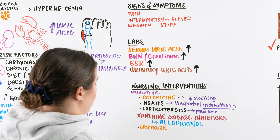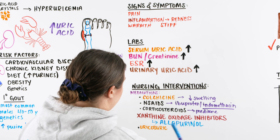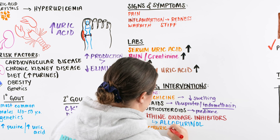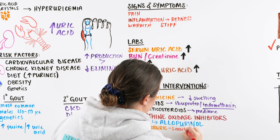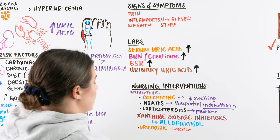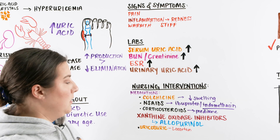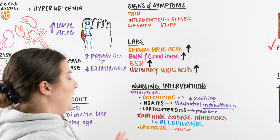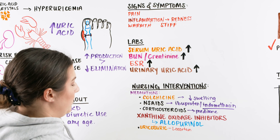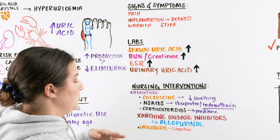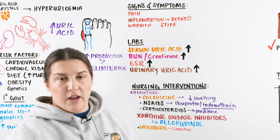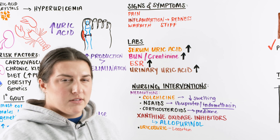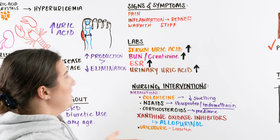The last category is uricosuric medications. Losartan is one example. What these do is decrease the reabsorption of uric acid — meaning once uric acid is excreted, it won't be reabsorbed, helping keep those levels down. Overall, we want to stress to patients not only medical adherence to decrease their gout, but also a low-purine diet and increased water intake, if allowed given their overall disease process.